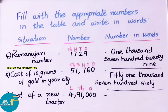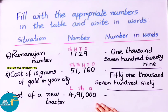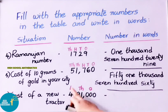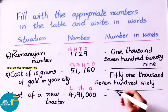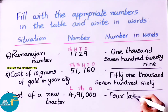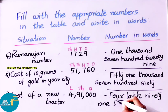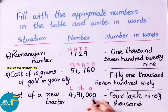Next example: cost of a new tractor. The approximate value is 4,91,000. In the lakhs place, 4 means 4 lakhs. In the thousands place, 91 means 91,000. In the ones period, there are zeros. So the number name is: Four Lakhs Ninety One Thousand.